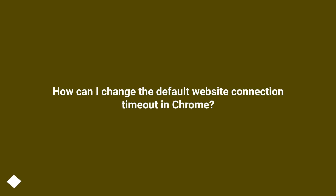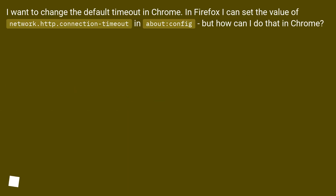How can I change the default website connection timeout in Chrome? I want to change the default timeout in Chrome. In Firefox I can set the value of network.http.connectionTimeout in about:config, but how can I do that in Chrome?